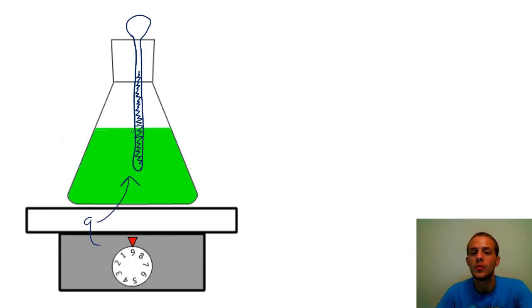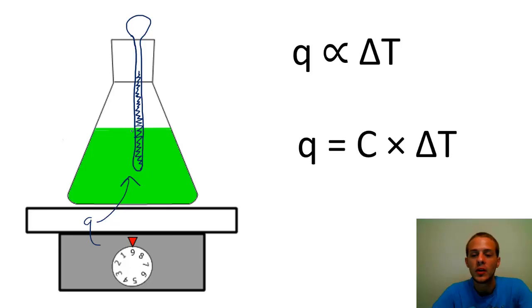So notice that the more heat that's absorbed, the larger the change in temperature. And that sounds a lot to me like a proportionality. As one goes up the other goes up. And so we arrive at this proportionality where we have the amount of heat absorbed is proportional to, directly proportional to, the change in temperature that we call delta T. And we can turn this proportionality into an equation by incorporating a proportionality constant that we call C.